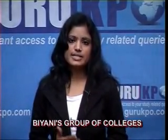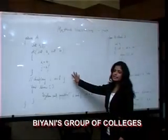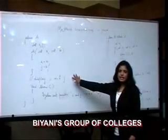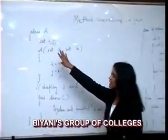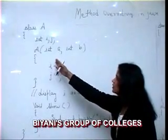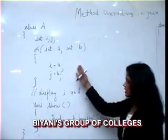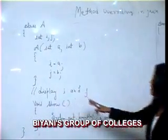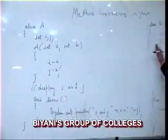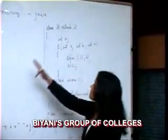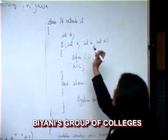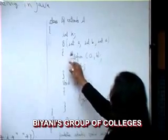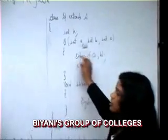Let's take an example. In this, I have taken a class with the name A, which has a two-argument constructor and a method show. Now, this is another class B, which is extending class A — which is basically a subclass of A. In this, I have also declared a two-argument constructor.